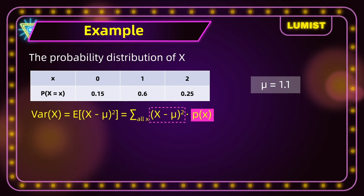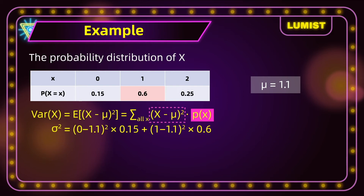The variance σ² equals: (0 − 1.1)² × 0.15, plus (1 − 1.1)² × 0.6, plus (2 − 1.1)² × 0.25. When we calculate this, we get 0.39. So the variance of x is 0.39.